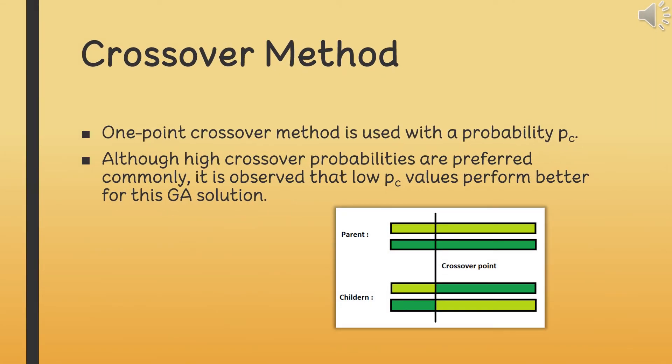One point crossover method, illustrated in the figure, is used with a probability PC. It is observed that low crossover probabilities, around 0.4, perform better for this GA solution, although high PC values like 0.7 or 0.8 are preferred commonly.